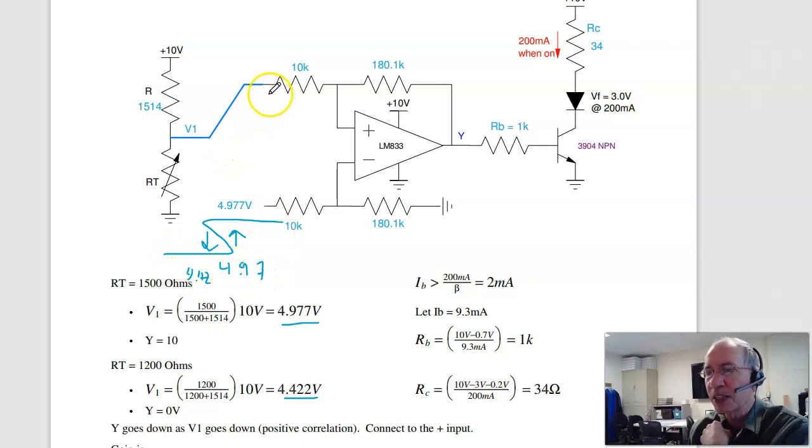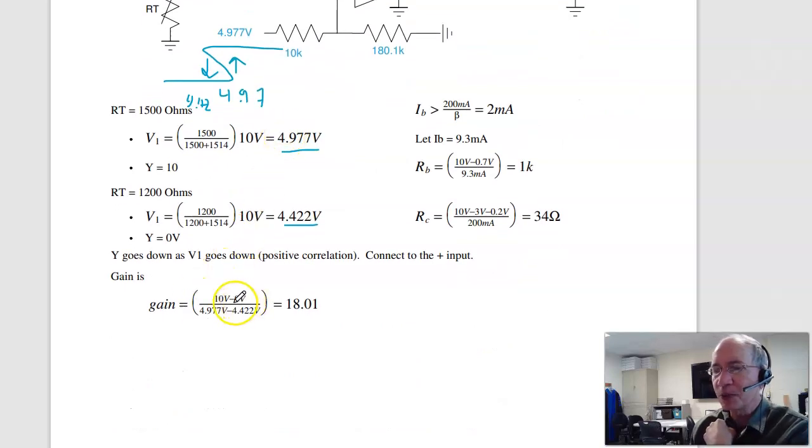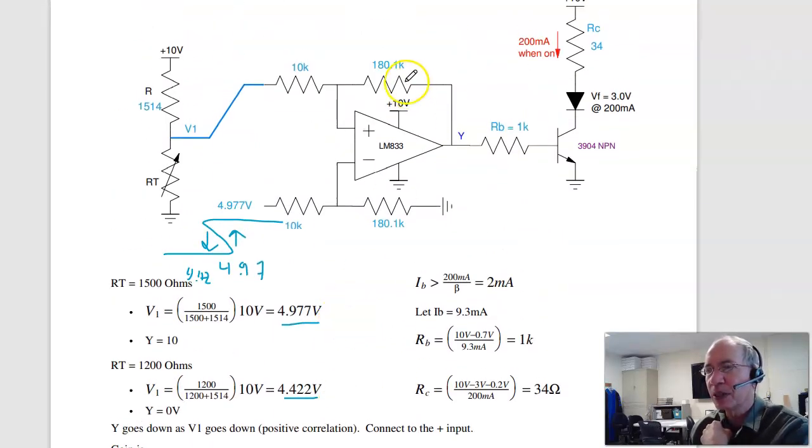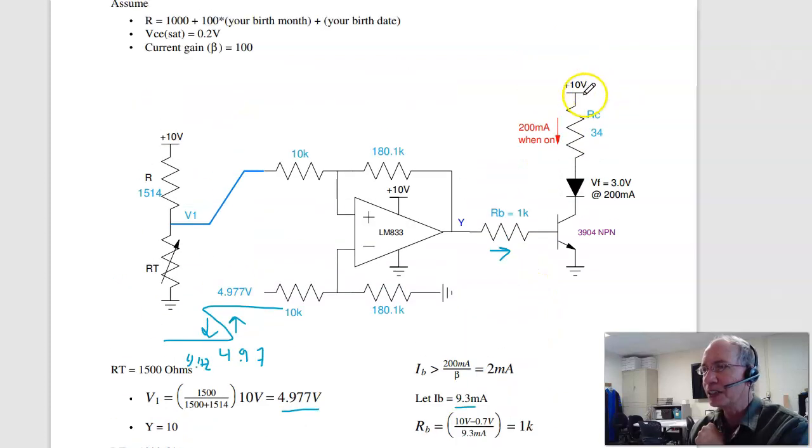Positive correlation. As the voltage goes up, the output goes up. Connect to the plus input. Where you turn on is your offset. The slope is the gain. The output changes by 10 volts as the input changes by 0.5 volts, 18 to 1. Make this 18 to 1 ratio. For RB, pick it so that the base current is bigger than 2 milliamps. Again, ICU over beta is 2 milliamps. Bigger than 2, less than 25. I chose 9.3. Anything between 2 and 25. Choosing 9.3 makes RB 1k. And then RC is 10 minus 3 volts across the diode, minus 0.2 volts across the transistor, gives you 34 ohms.